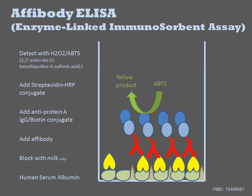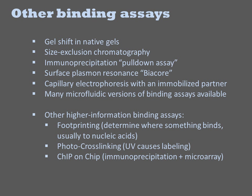Thus, ultimately, we are monitoring HRP reactions, but the HRP will only be present in the well if all the other non-covalent reactions took place. There are many variations on ELISA assays. In all cases, you build up a sandwich of interactions that ultimately results in retention of a readily detected enzyme or a fluorophore, and then this is read out using appropriate photometric or fluorometric methods.